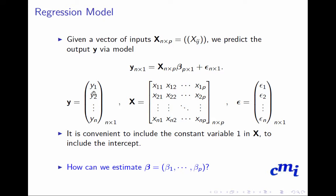So y is n cross 1, y1 to yn. There are n samples, each of them are simple random samples. These are the feature matrix: x11, x12 to x1p, in this way xn1, xn2 to xnp. And epsilon is epsilon 1 to epsilon n.